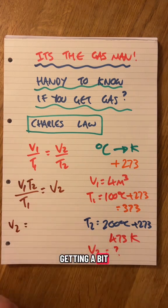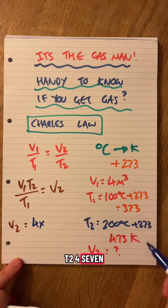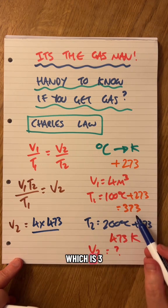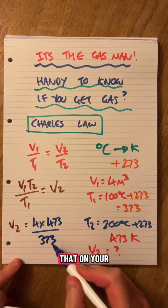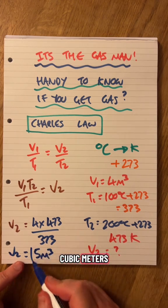So V2 is going to be V1, which is 4, times T2 in Kelvin, which is 473, divided by T1 in Kelvin, which is 373. We put that in the calculator and the volume has changed to 5 cubic meters.